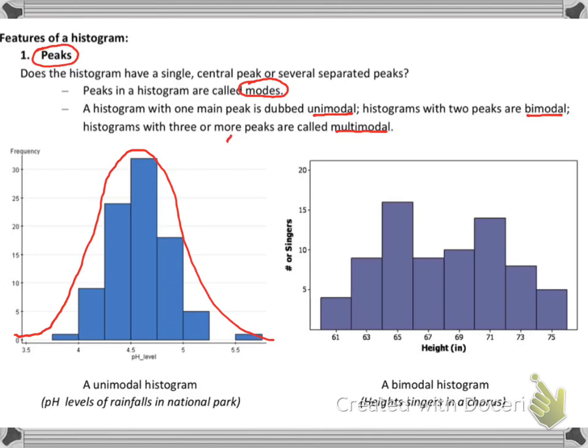And then I do what I have dubbed the roller coaster test. This is kind of silly, but it's an easy way to remember modes. So if you are in a tiny little car going up here on your roller coaster, then you really only have one big peak or one mountain. So that's how you can see that this is a unimodal histogram. Over here, again, if we apply our little roller coaster test, we can see that we have one, two little hills there. So that would be a bimodal histogram.